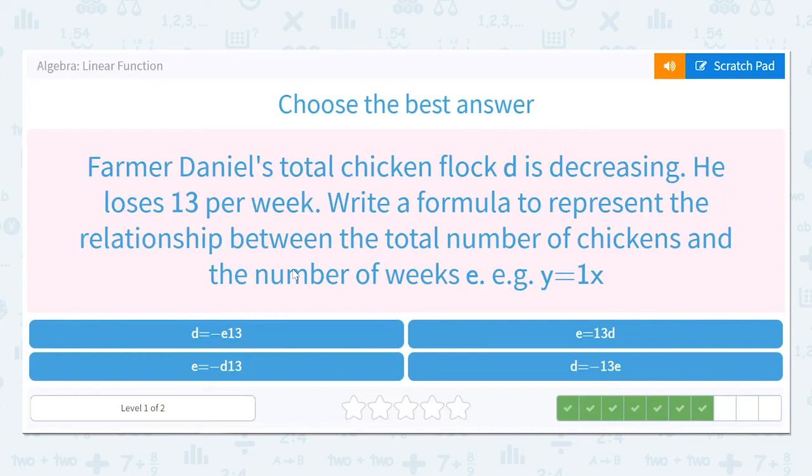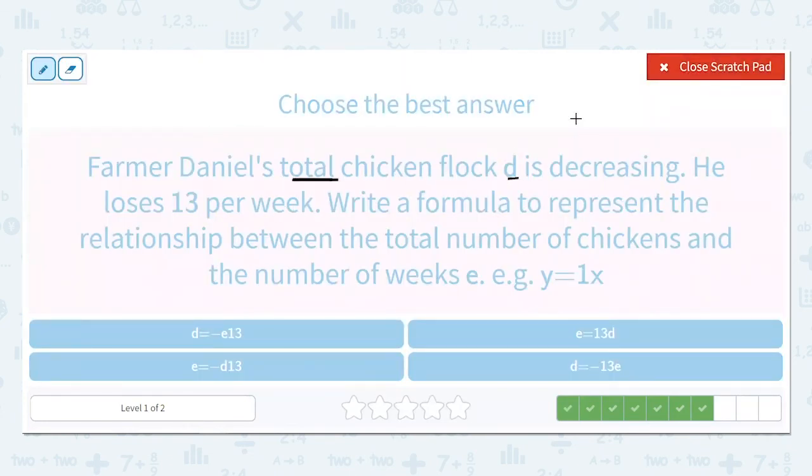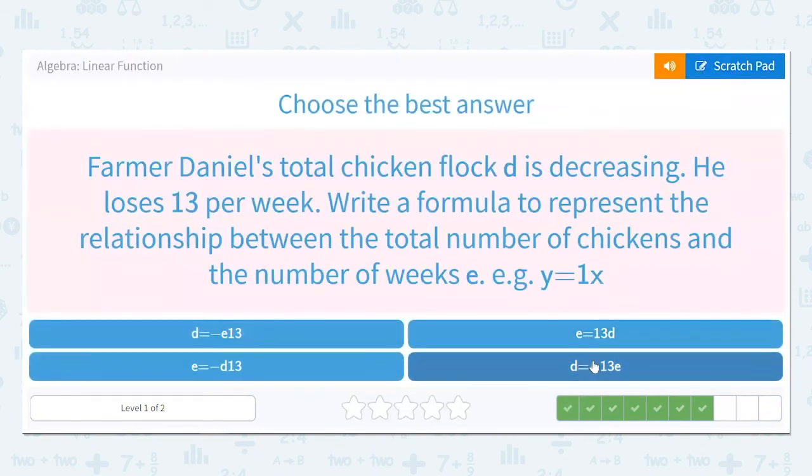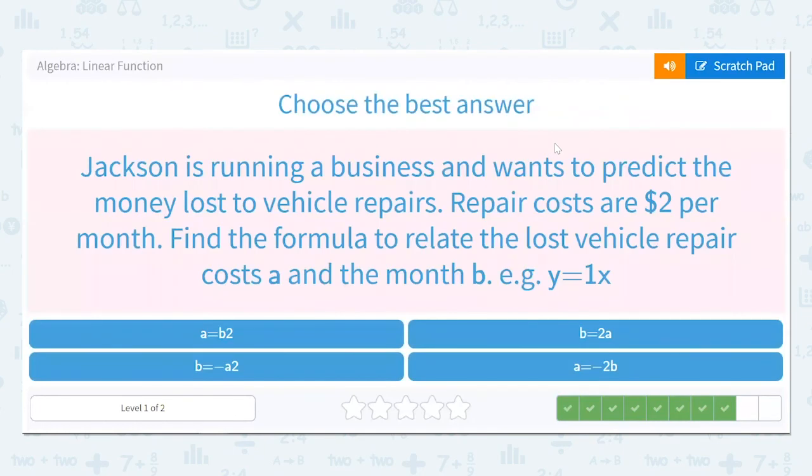We have another chicken question here. Farmer Daniel this time. Farmer Daniel's total chicken flock, D, is decreasing, going down again. He loses 13 chickens per week. Write a formula to represent the relationship between the total number of chickens and the number of weeks, E. So the total is D. We know his chicken flock is decreasing. So it's going down, negative. He loses 13 birds per week for E weeks. So very similar to the other chicken question. D equals negative 13E. Don't be tricked into putting negative E 13. D equals negative 13E.